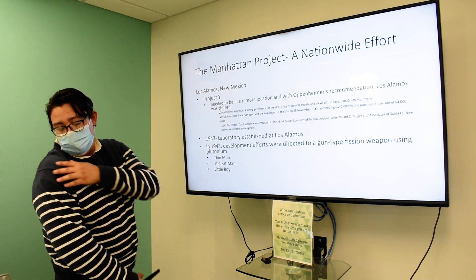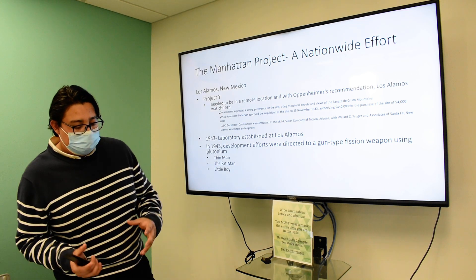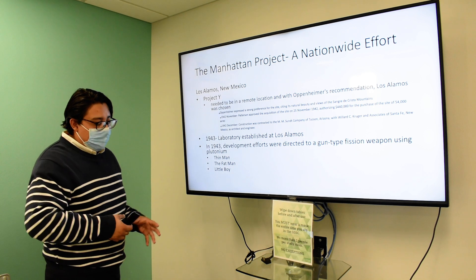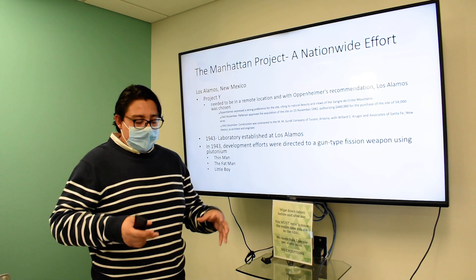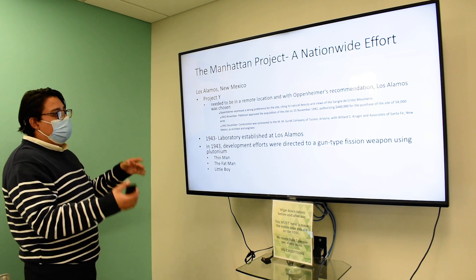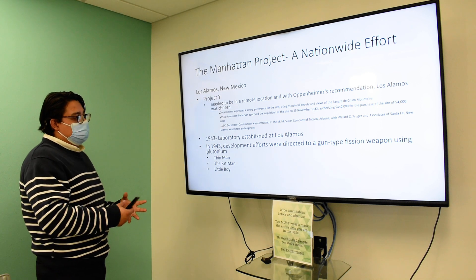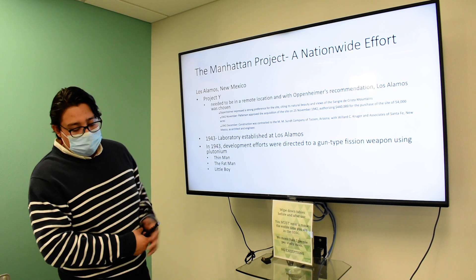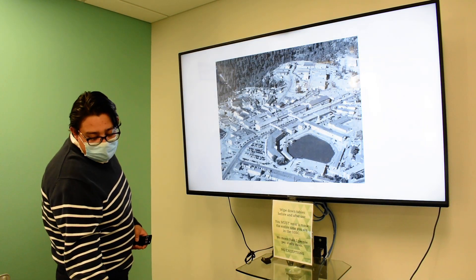Finally, Los Alamos is the biggest of these sites. Oak Ridge, Chicago, and Hanford are all creating enriched uranium that ends up going to Los Alamos, where the bomb is actually assembled under Oppenheimer — that's why it's so important. The bombs being developed there include Thin Man, Fat Man, and Little Boy. This is a picture of the Los Alamos site.